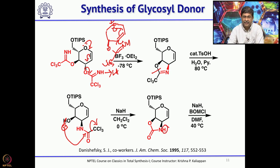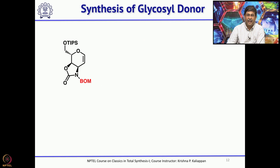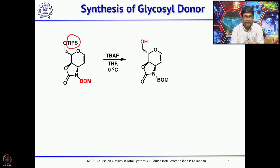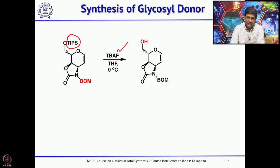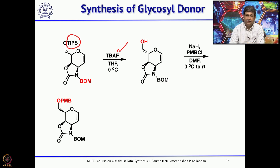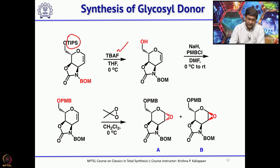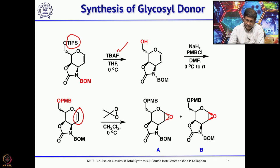Once the cyclic carbamate is formed, the NH is protected as BOM by treating with sodium hydride and benzoyloxymethyl chloride. The primary hydroxyl group protected as TIPS is released by treating with a fluoride source like TBAF, and then the same primary alcohol is protected with a sturdy PMB group. The double bond is then epoxidized with dimethyldioxirane, giving a mixture of two epoxides where the required compound A was the major isomer.